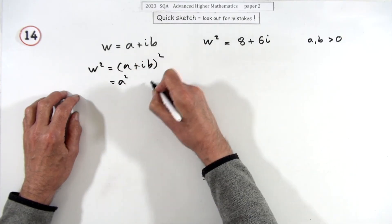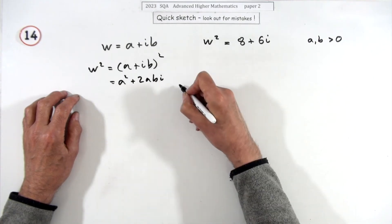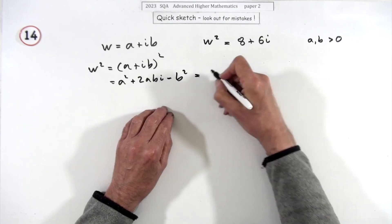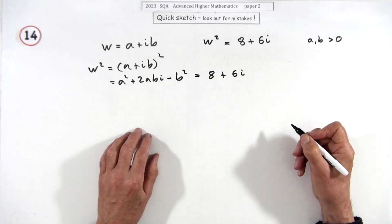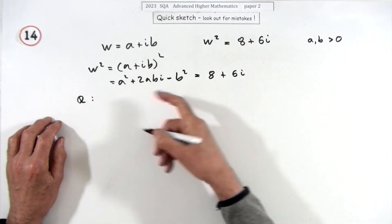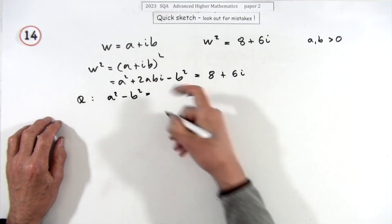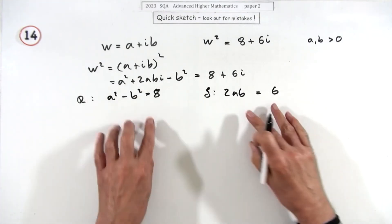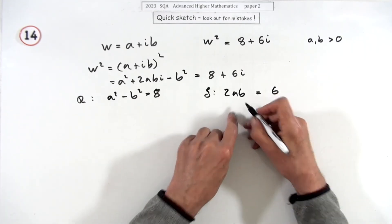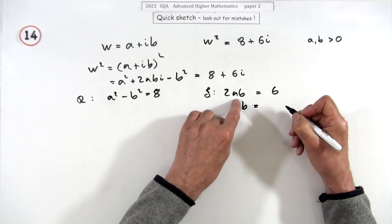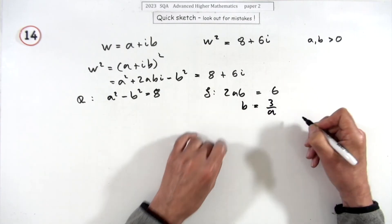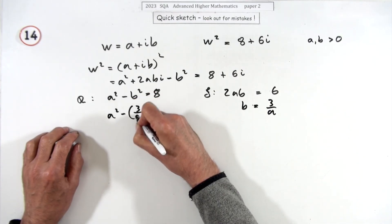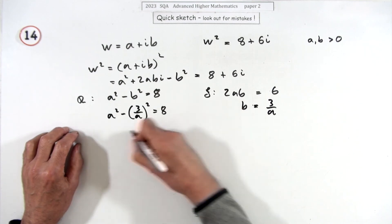So w² = (a² minus b²) + 2ab·i, and this equals 8 + 6i. Comparing real parts: a² minus b² = 8. Comparing imaginary parts: 2ab = 6, so b = 3/a. Substitute into the real part equation: a² minus (3/a)² = 8, which gives a² minus 9/a² = 8.